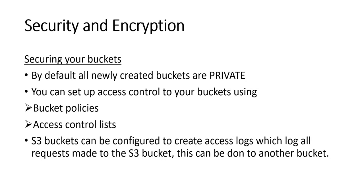You can set up access control to your buckets using bucket policies and access control lists. Bucket policies give permission to the whole bucket, while access control lists give permission to individual objects inside the bucket. S3 buckets can also be configured to create access logs which log all requests made to the S3 bucket, and this can be done to another bucket.